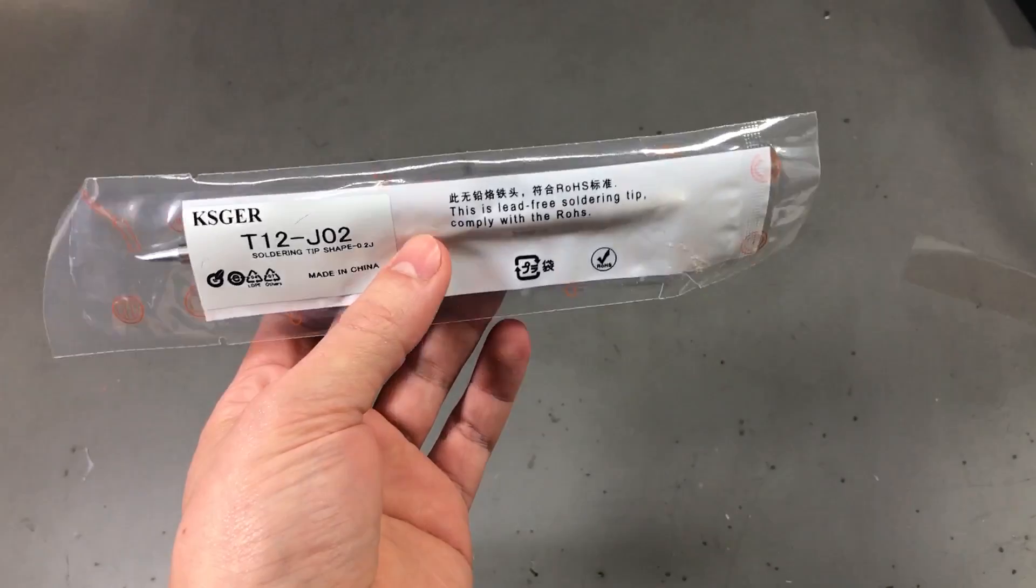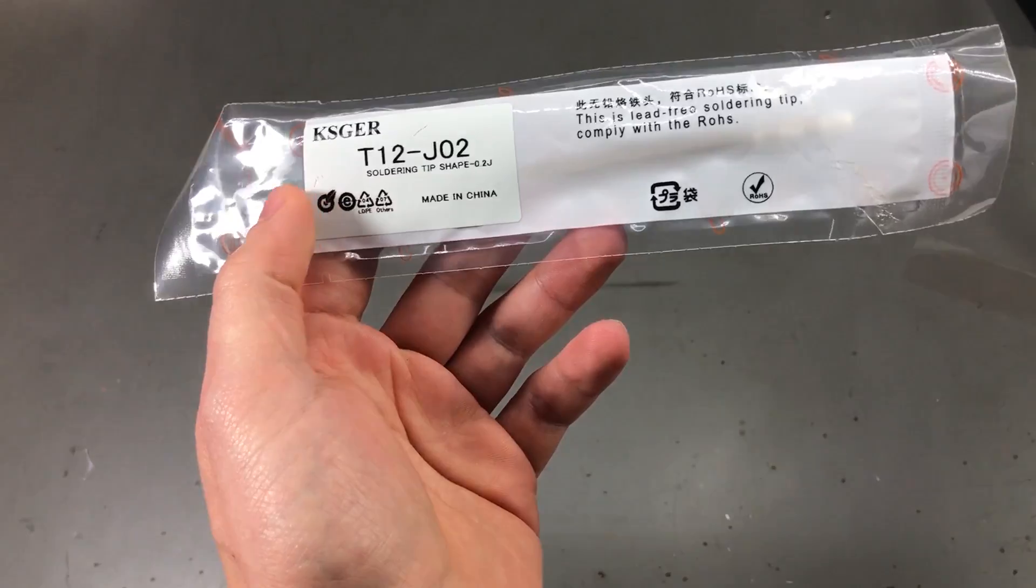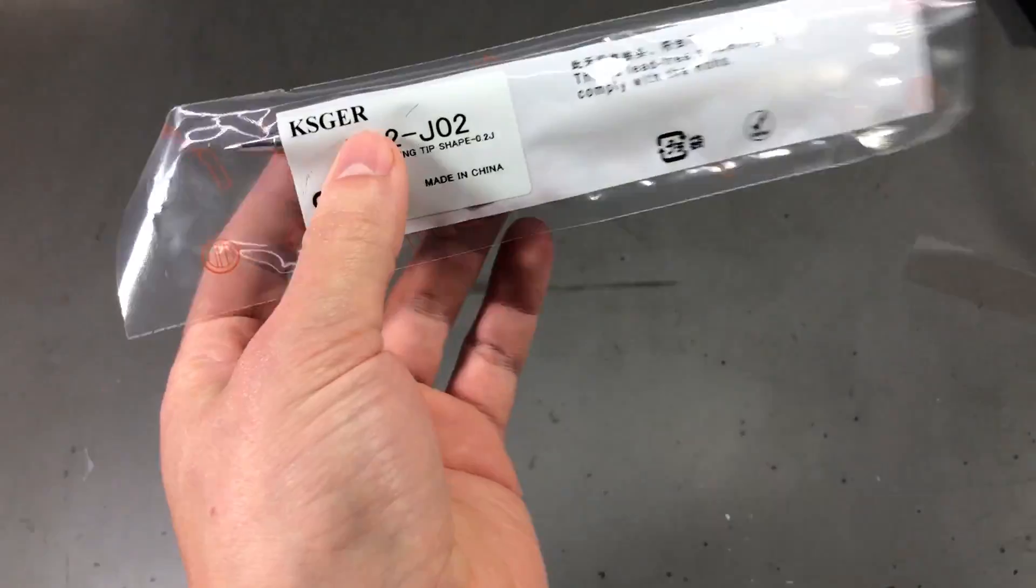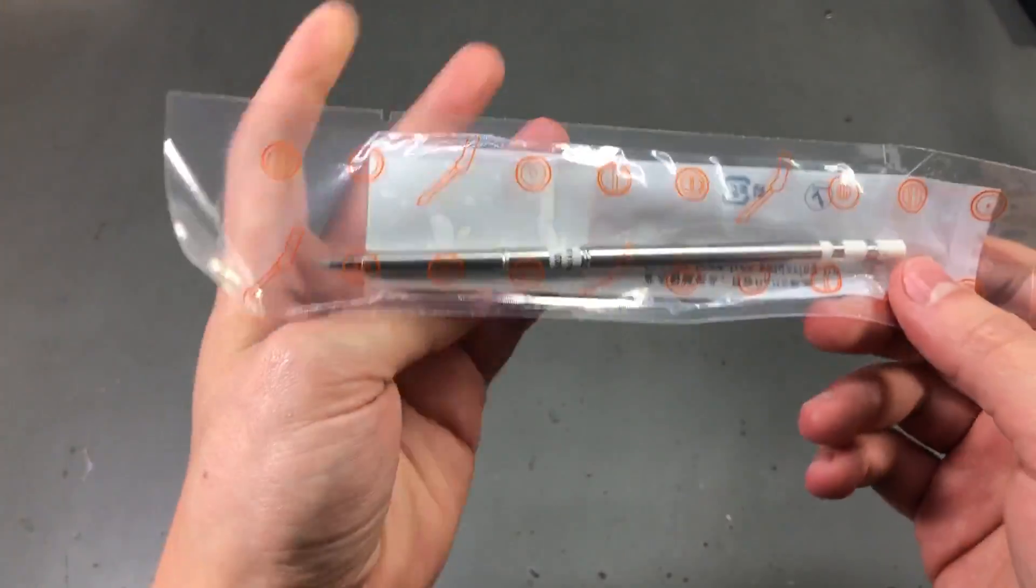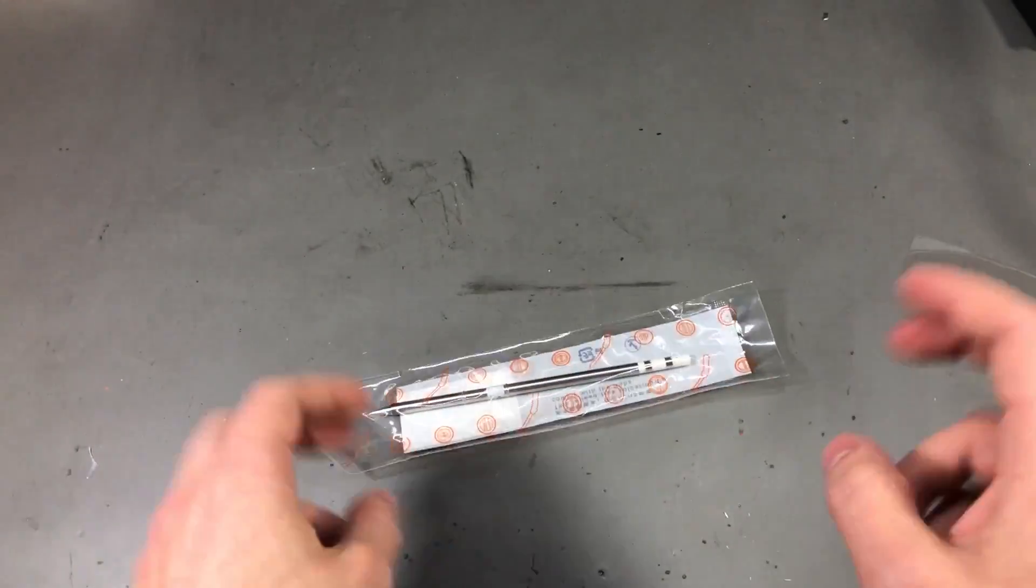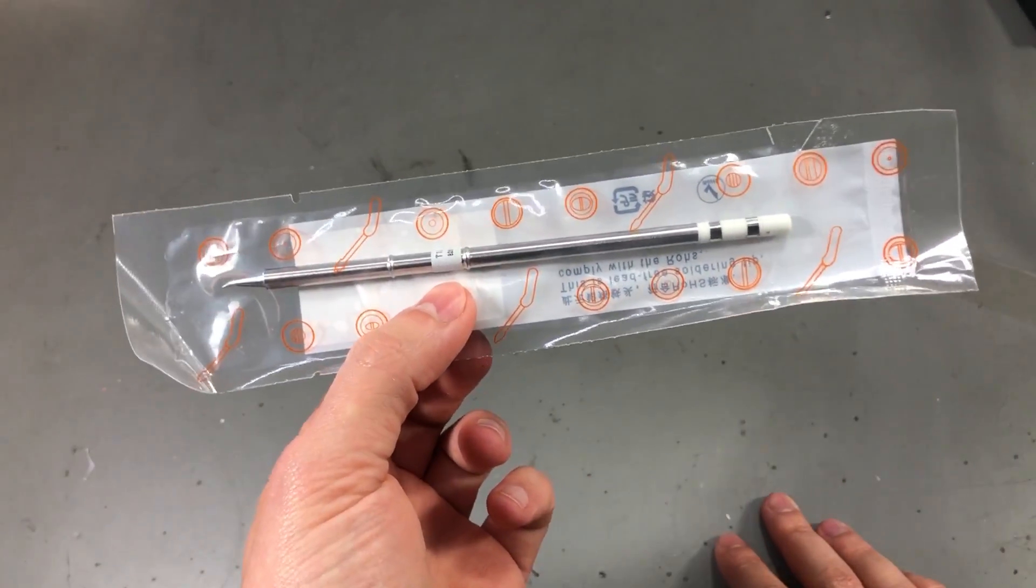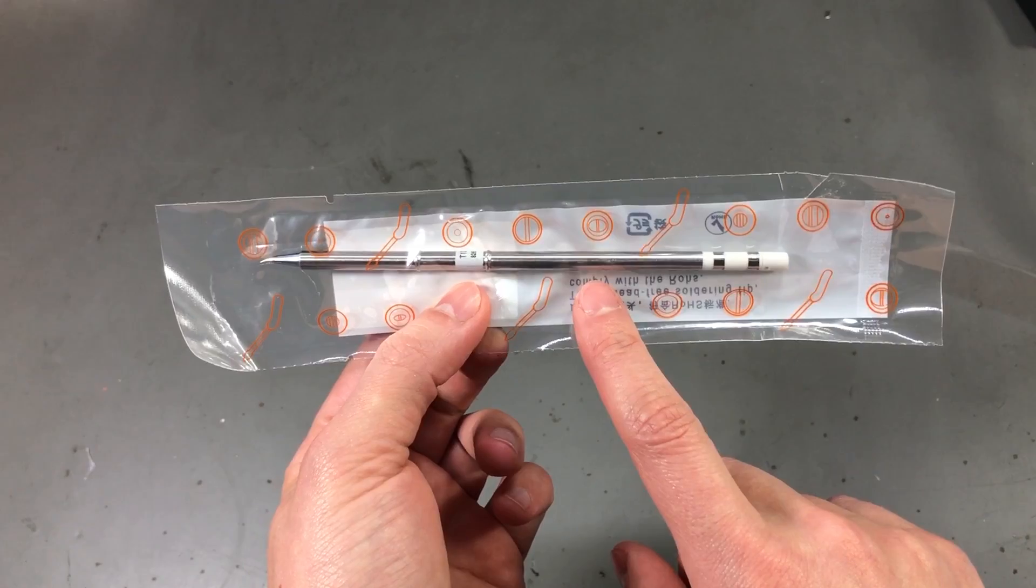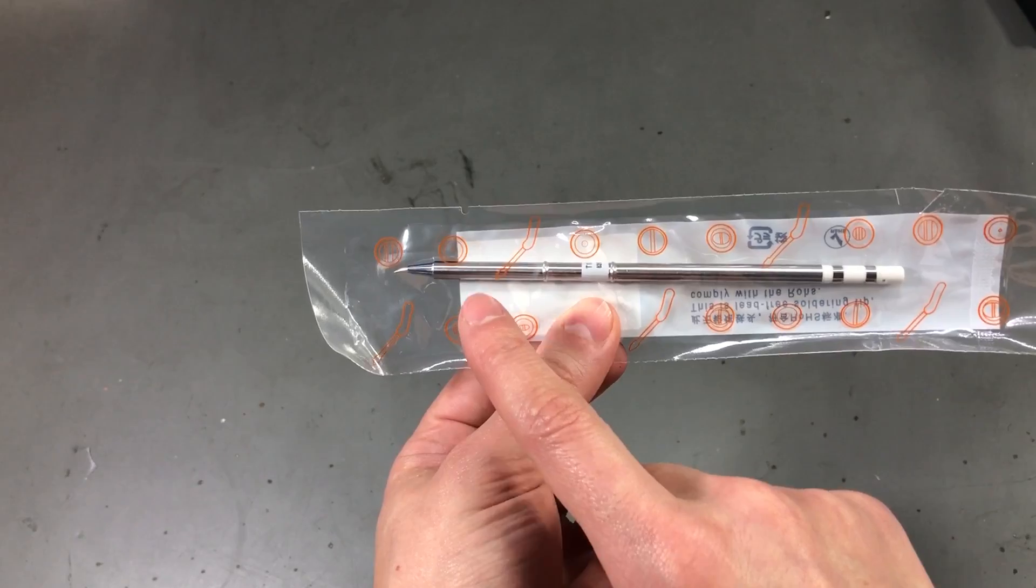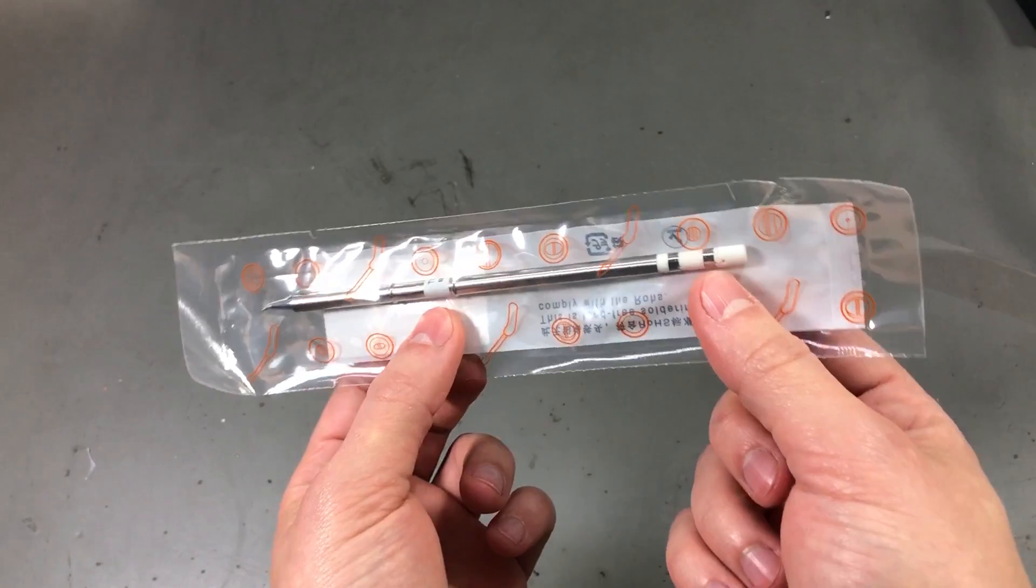Next item is a replacement for a Hakko T12 soldering tip. This one is from a company called Kiesger. I'm sure they just rebrand these tips they get from a factory in China, the same factory that supplies all sellers which offer replacement or genuine Hakko T12 tips. So this looks very similar to the genuine Hakko tips but I wanted to do a comparison to see if the performance is also similar.